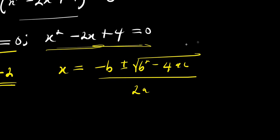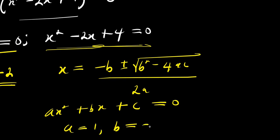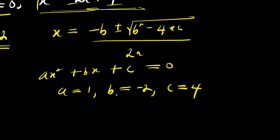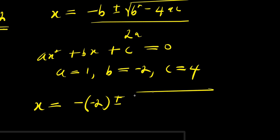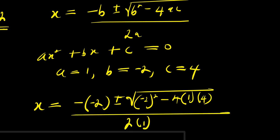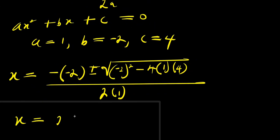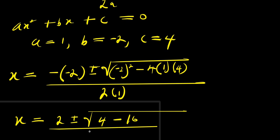The quadratic formula is x equals negative b plus or minus square root of b squared minus 4ac, divided by 2a. Comparing x squared minus 2x plus 4 equals 0 with the general quadratic ax squared plus bx plus c equals 0, we get a equals 1, b equals negative 2, c equals 4. So x equals negative of negative 2, plus or minus square root of negative 2 squared minus 4 times 1 times 4, divided by 2 times 1.